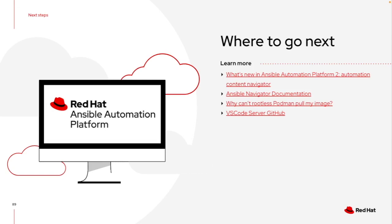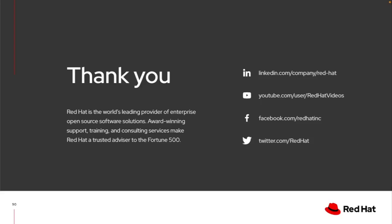Where can you go next? Check out a blog that walks through what Ansible Navigator is, as well as the documentation for installing it on Linux, Windows, or Mac. I've also got a blog on why Podman can't pull your image — that's why I had to edit the sub-UID and sub-GID files. And there's a link for the VS Code server on GitHub. I hope you appreciate learning how to stand up an Ansible server. The easiest way is to get hands-on time and start building. Thank you.